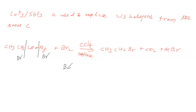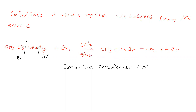This method is called the Borodyne-Hansdecker reaction. In the Borodyne-Hansdecker method, we prepare Bromoalkane by taking the silver salt of carboxylic acid and allowing it to react with Bromine.